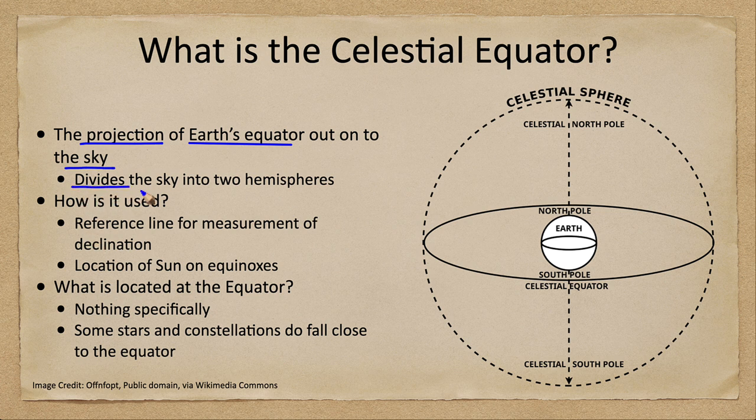Just like Earth's equator, the celestial equator divides the sky into a northern and southern hemisphere. The north celestial pole would be in the northern hemisphere, then you'd have the equator halfway through as you move along the celestial sphere, and at the other end you'd have the south celestial pole. Just as Earth's equator divides Earth into two parts, the celestial equator divides the sphere of the stars into two parts.